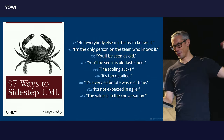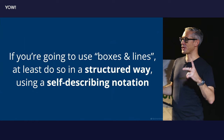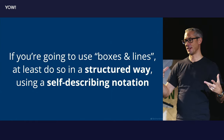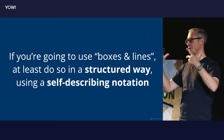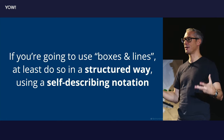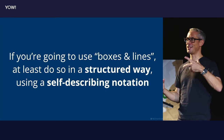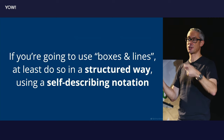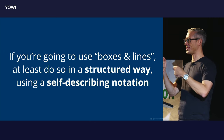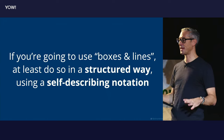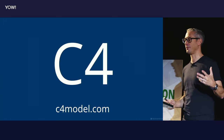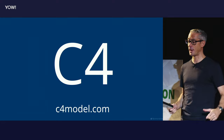Why? A whole bunch of reasons, of course. So given that people don't want to use UML these days, my advice is really this: if you want to use boxes-and-arrows-type diagrams to describe your software architecture, at least try to do so in a structured manner. Make sure your diagram notation is self-describing to some extent. And that's really the whole concept behind my C4 model for visualizing software architecture.